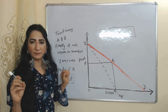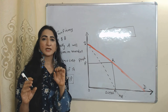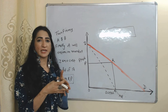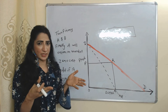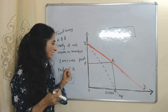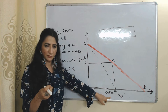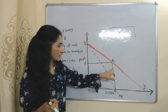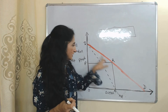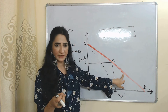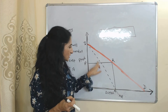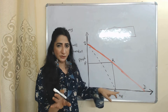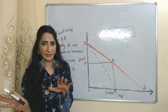Now we understand this model with the help of a diagram. We assume we have only two firms, A and B. First of all, A will enter the market, so A has monopoly. On the x-axis we have output of A, on the y-axis we have price of A. The DD curve shows the market demand curve, and the dotted line shows the marginal revenue curve of firm A.